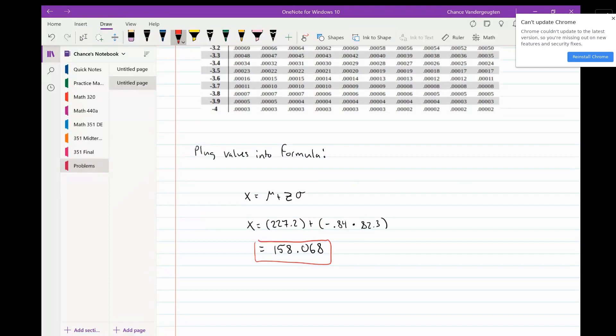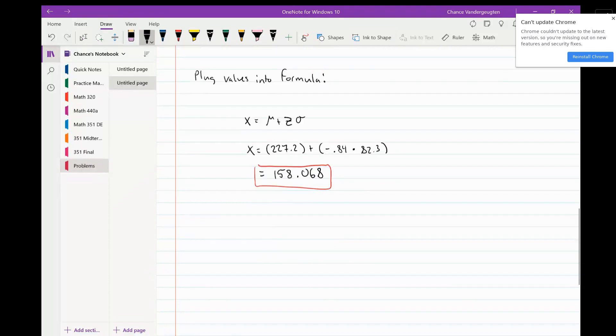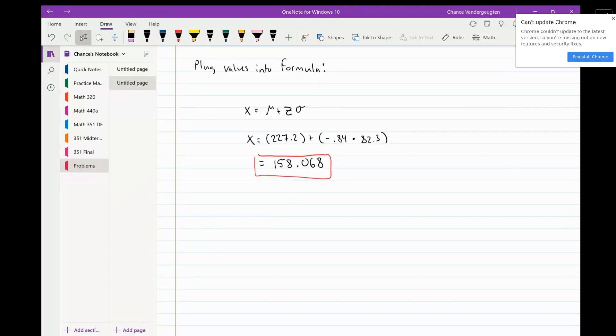When you plug this into a calculator, you should get 158.068. That's the answer to this question. Now, if you want to check if the answer makes sense, we can take the mean, which is 227.2, and subtract one standard deviation, 82.3, which gives us 144.9.